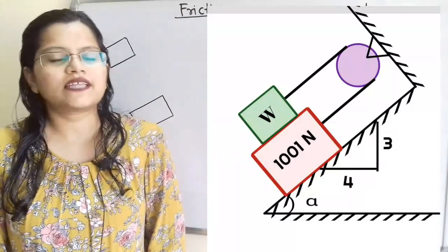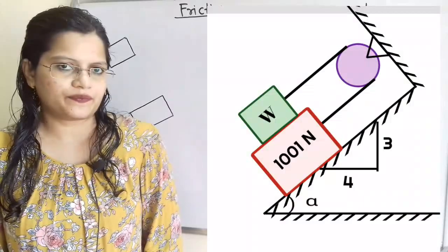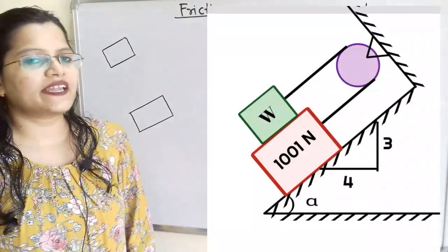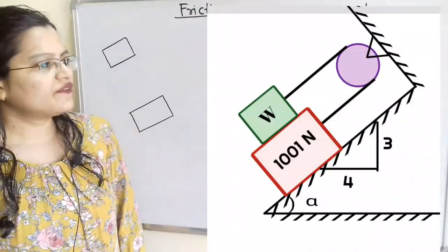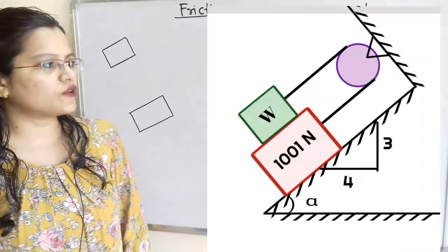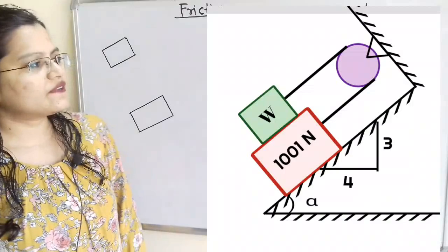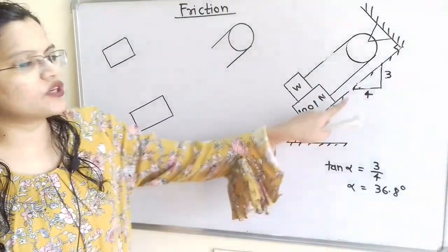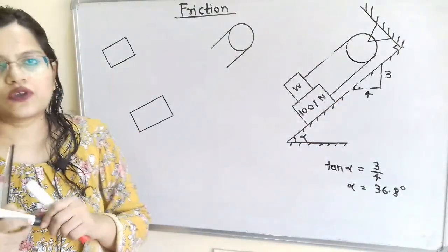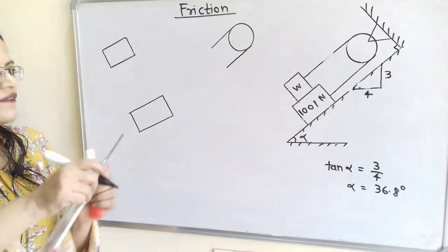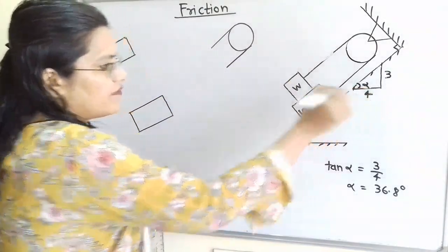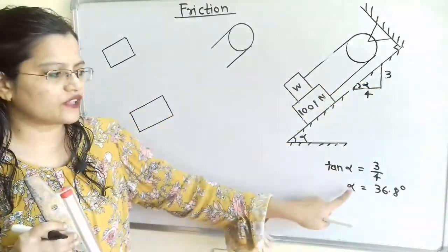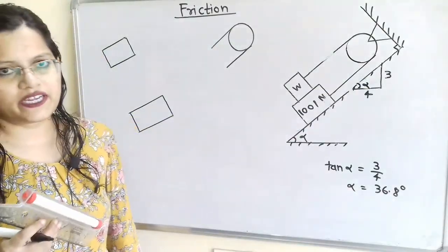Let us understand the given question with the help of a diagram. The 1001 Newton block is placed on an inclined surface where the slope is defined with horizontal line 4 and vertical line 3. Since the two horizontal lines are parallel, the angle alpha is the same, and we can define tan(alpha) = 3/4, therefore alpha = 36.8 degrees.